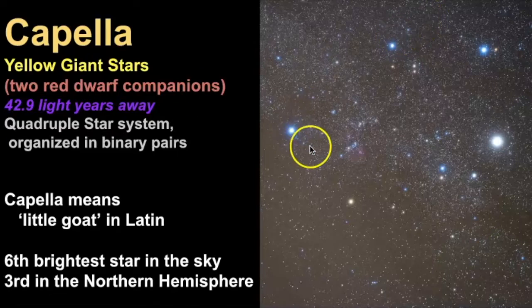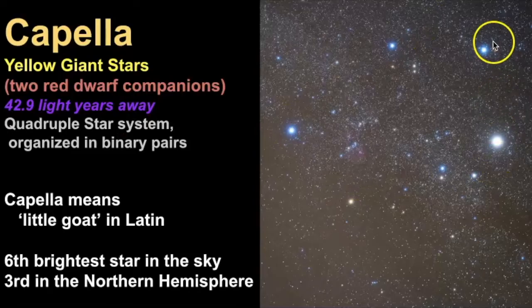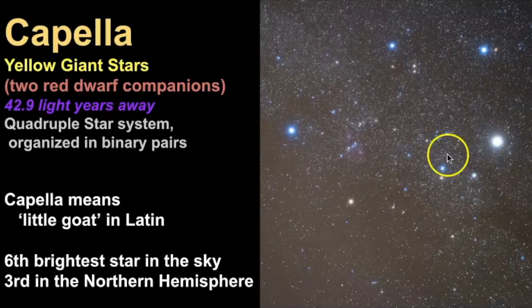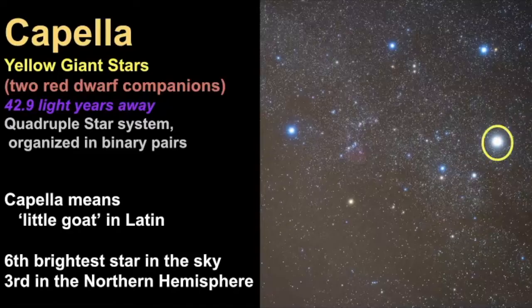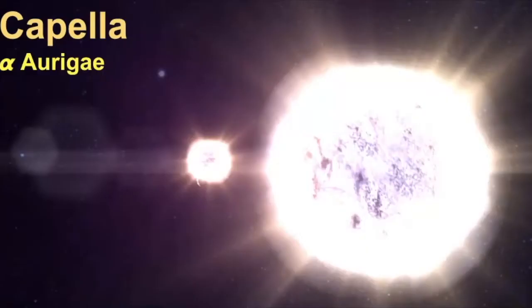And as you're looking at this picture, here is the shape that I see when I see Auriga. I see the pentagon shape and those are the five stars that stand out to me, but Capella is the brightest one. So let's dive in a little bit deeper to this star system.